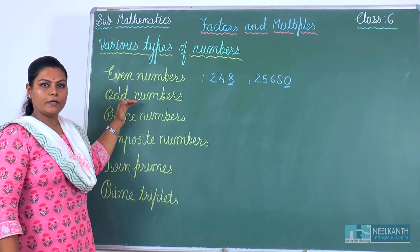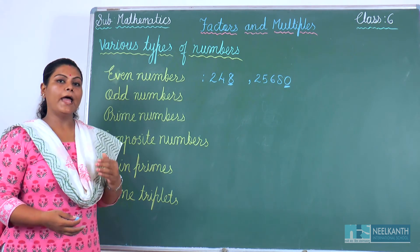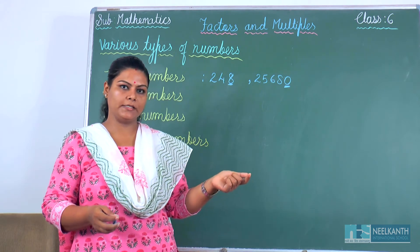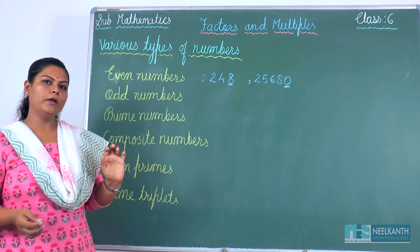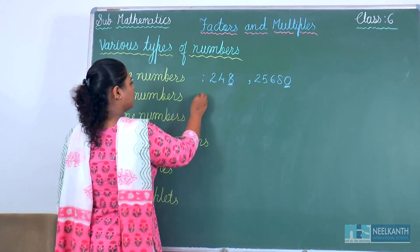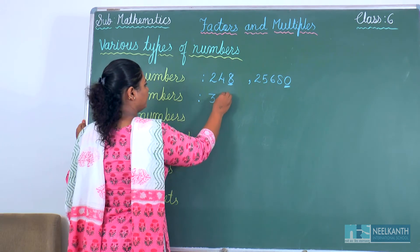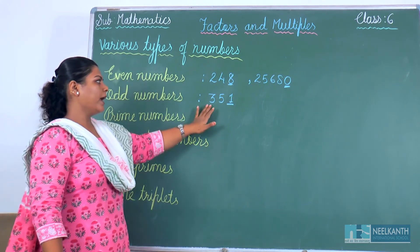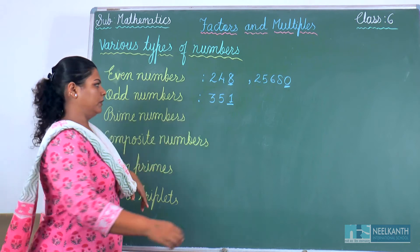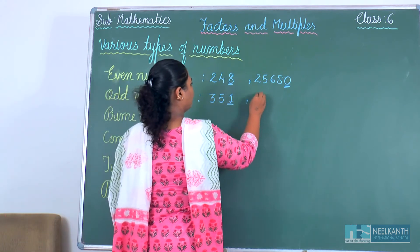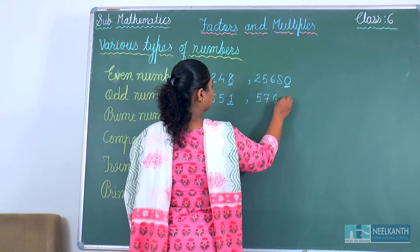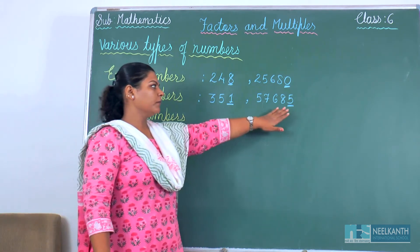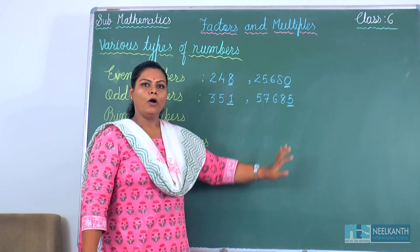Now, what are odd numbers? When a number ends with 1, 3, 5, 7 or 9 at the ones place, these numbers are called odd numbers. For example, 351 — the number ends with 1, so it is called an odd number. One more example: 57,685 — it ends with 5, so when a number ends with 5 it is called an odd number.